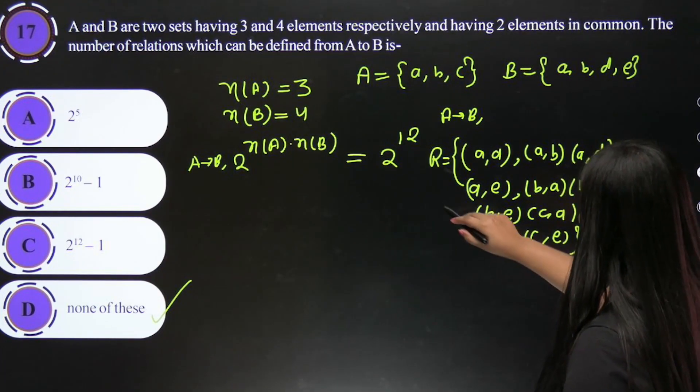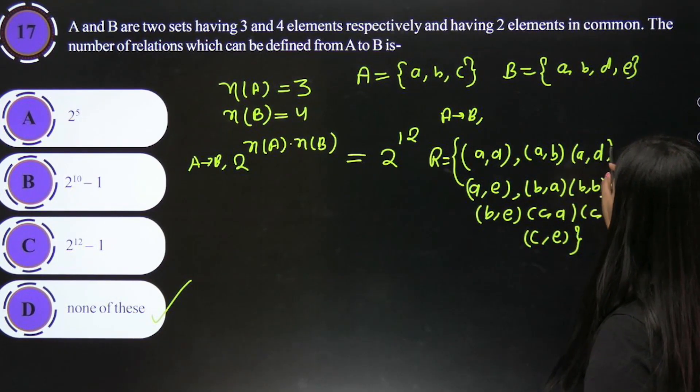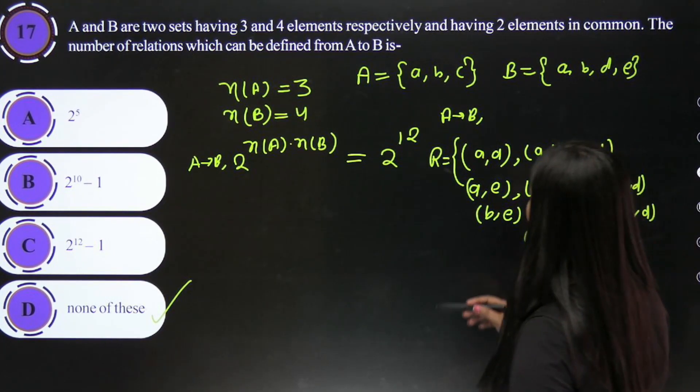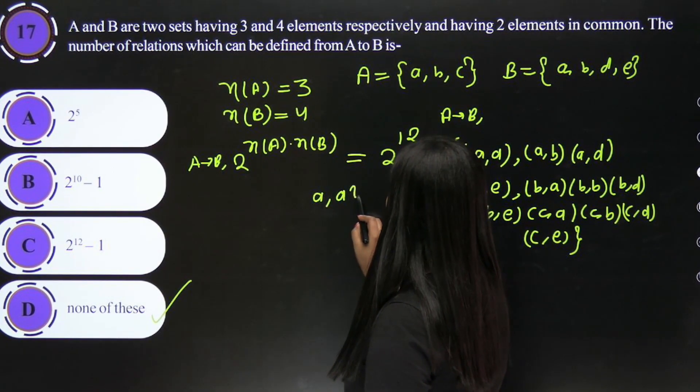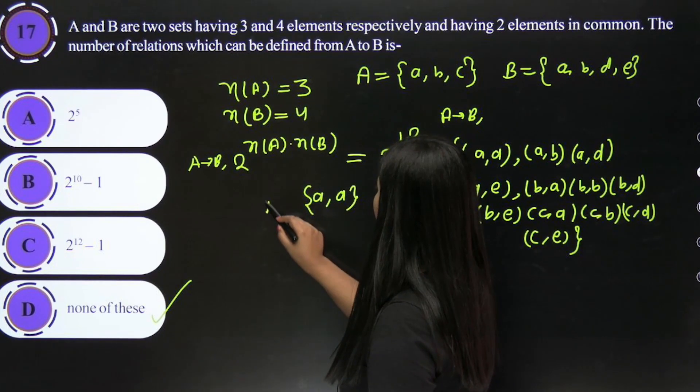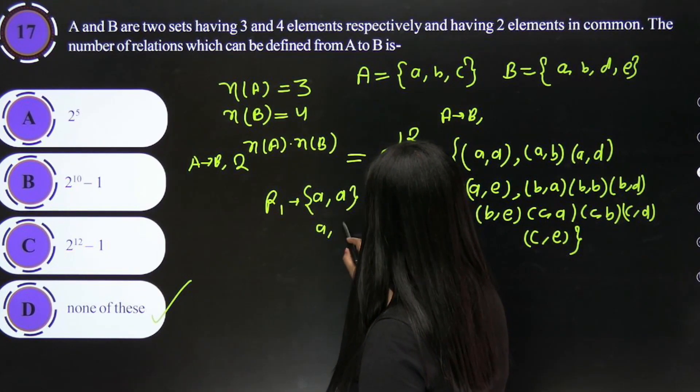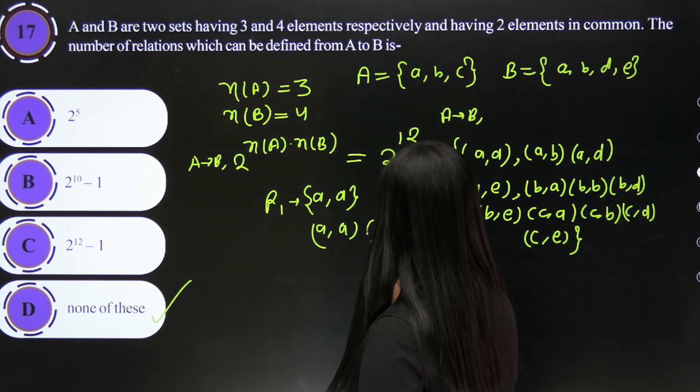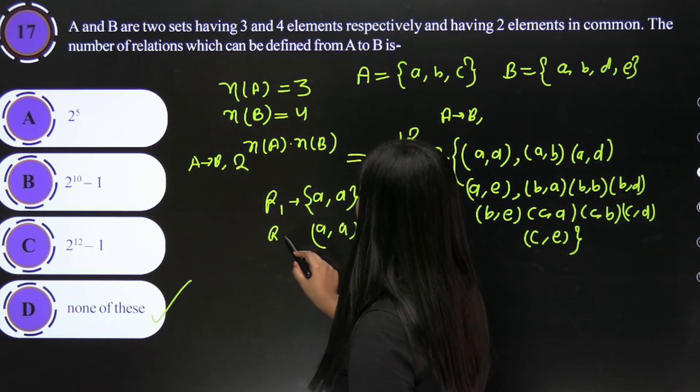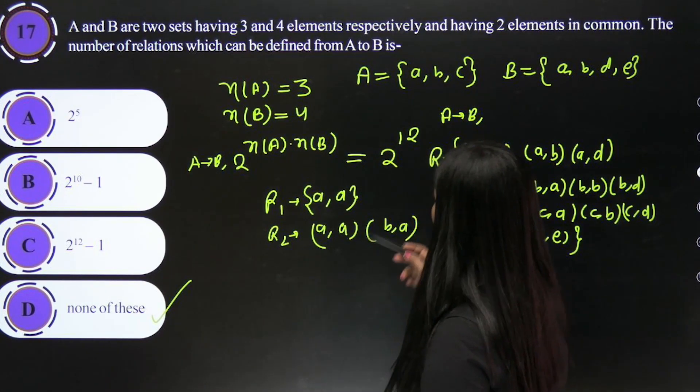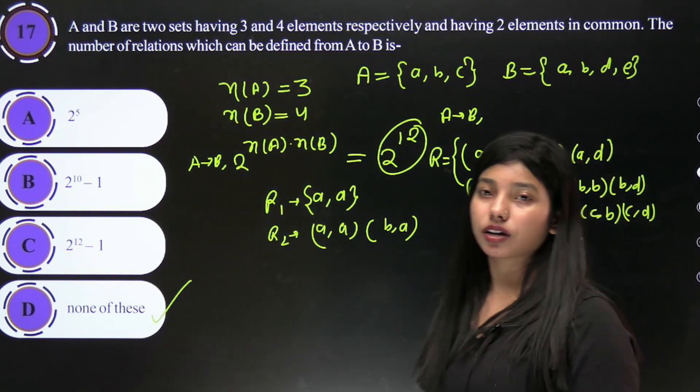So this is one relation R that is formed from these ordered pairs. Now from all these ordered pairs that are formed, we can make different relations by taking them separately - one relation could have just (a,a), another could have (a,a) and (b,a). So in this way, 2 to the power 12 relations will be formed. This is your answer.